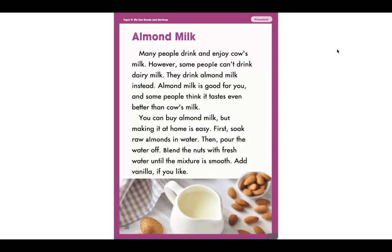Today we're going to read one of our shared reading stories called Almond Milk. Listen as I read the story to you. Many people drink and enjoy cow's milk. However, some people can't drink dairy milk. They drink almond milk instead. Almond milk is good for you, and some people think it tastes even better than cow's milk. You can buy almond milk, but making it at home is easy. First, soak raw almonds in water. Then pour the water off. Blend the nuts with fresh water until the mixture is smooth. Add vanilla if you like.